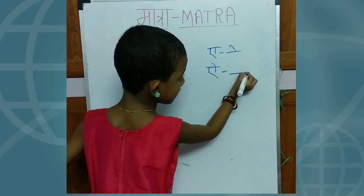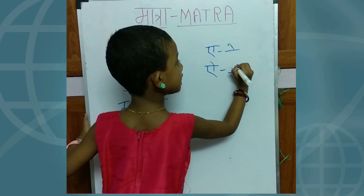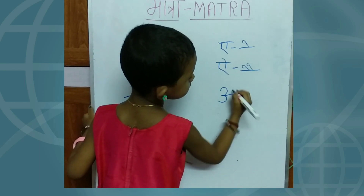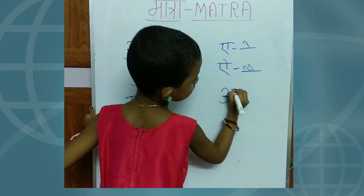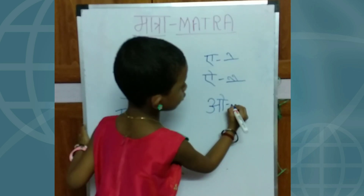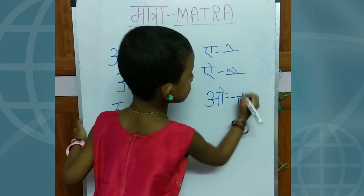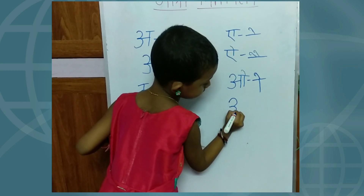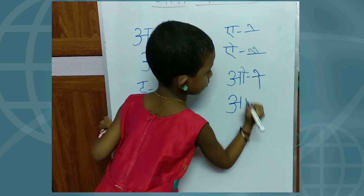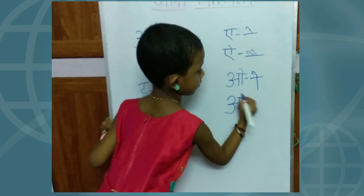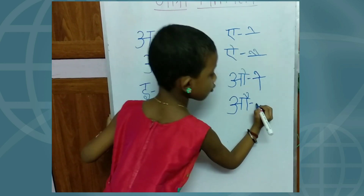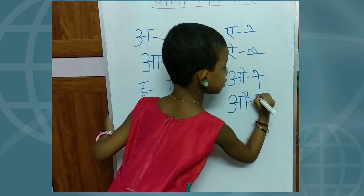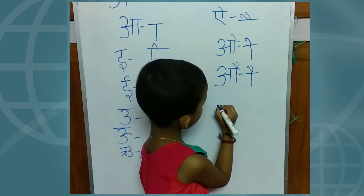One sleeping line, slanting line, slanting line — Oo ki matra. One sleeping line, one slanting line, one slanting line — Oo ki matra. One slanting line, two slanting lines — Oo ki matra.